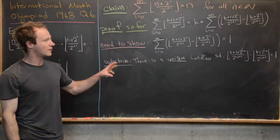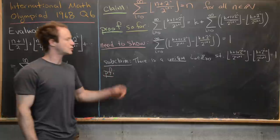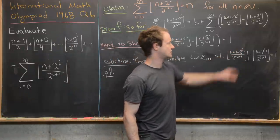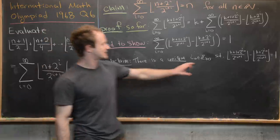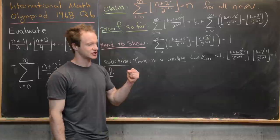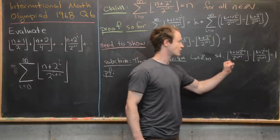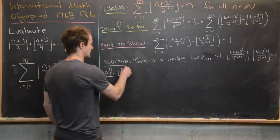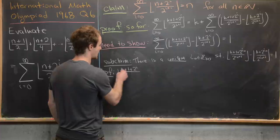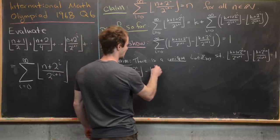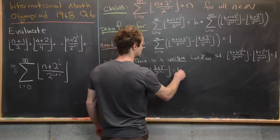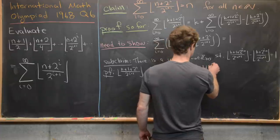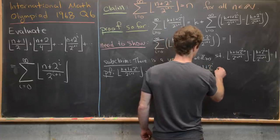For subclaim 1, we need to find one such i₀. The floor difference equals 1 if and only if (k+1+2^i)/2^(i+1) is a natural number — that is, 2^(i+1) divides k+1+2^i, which means 2^i divides k+1 but 2^(i+1) does not divide k+1.